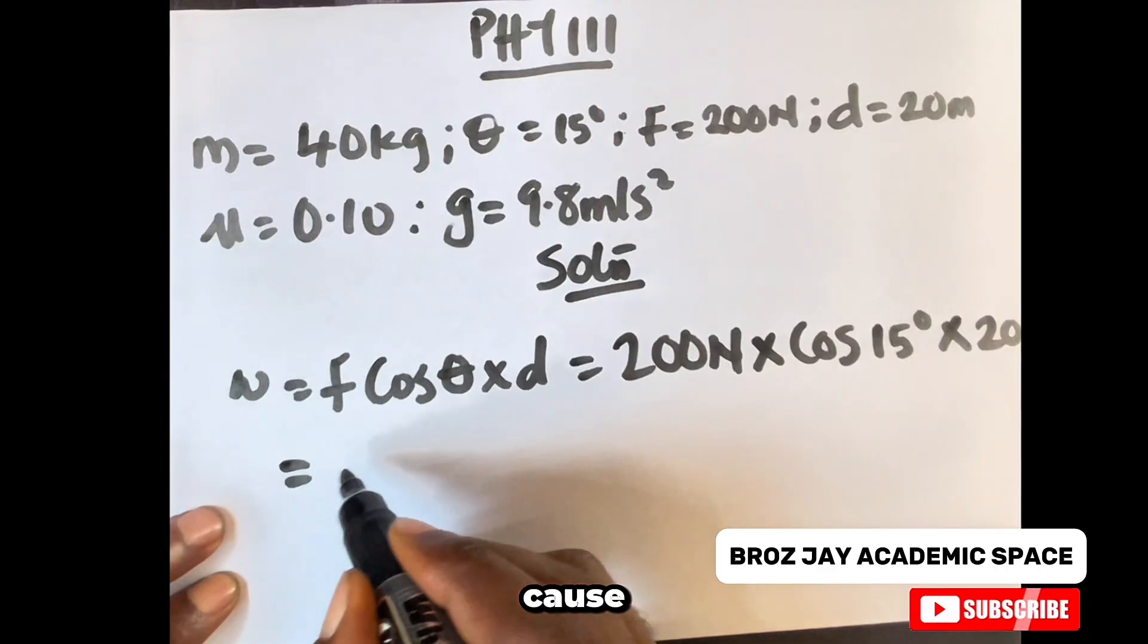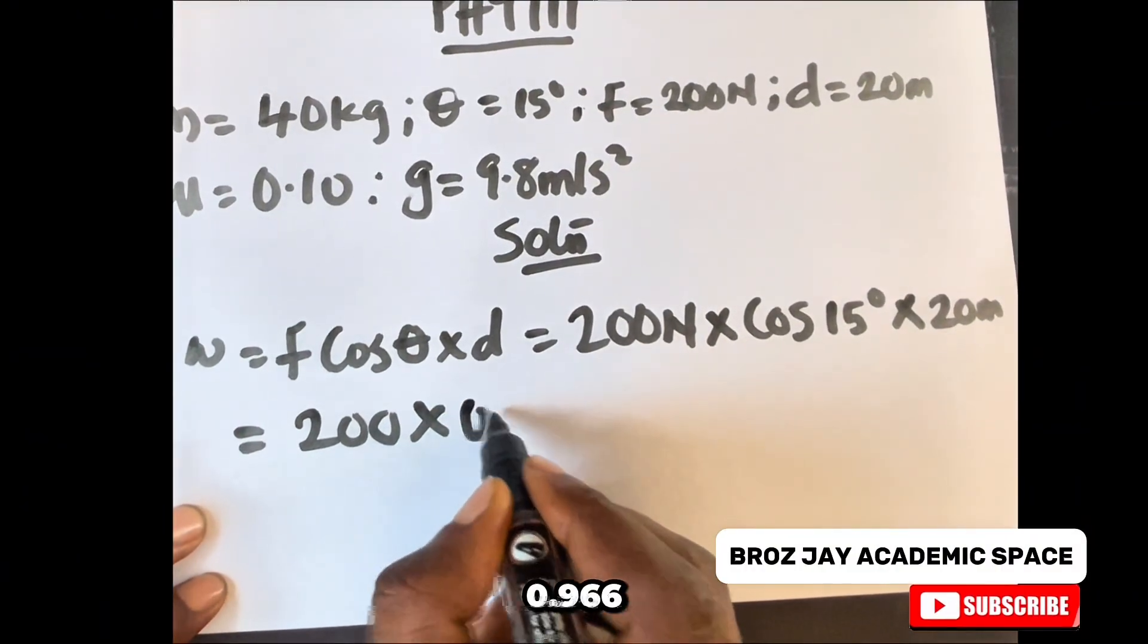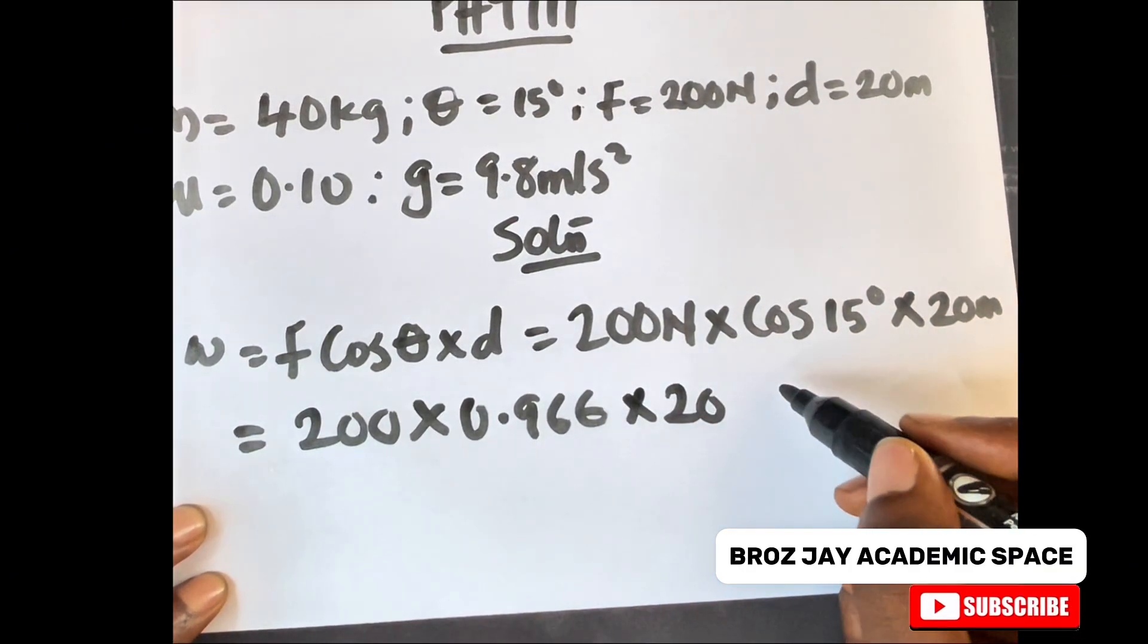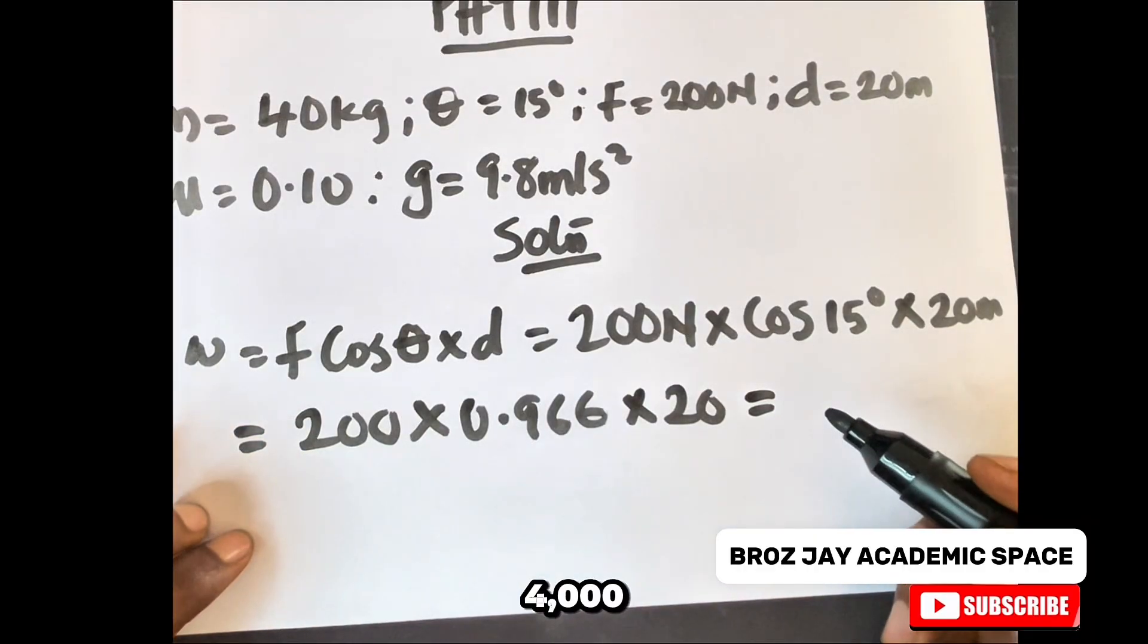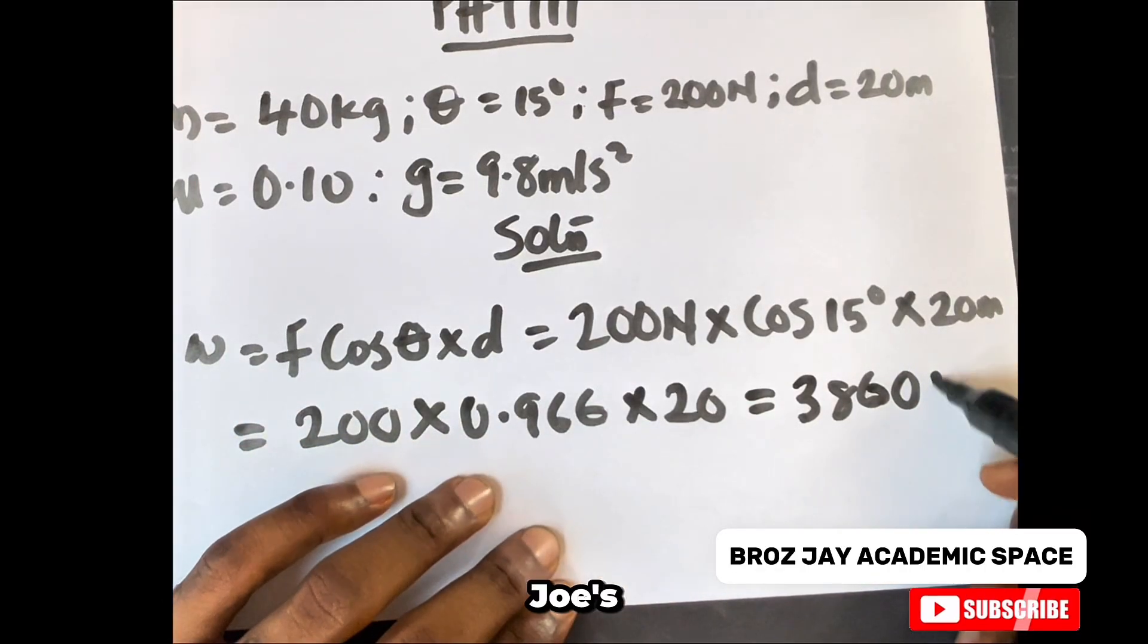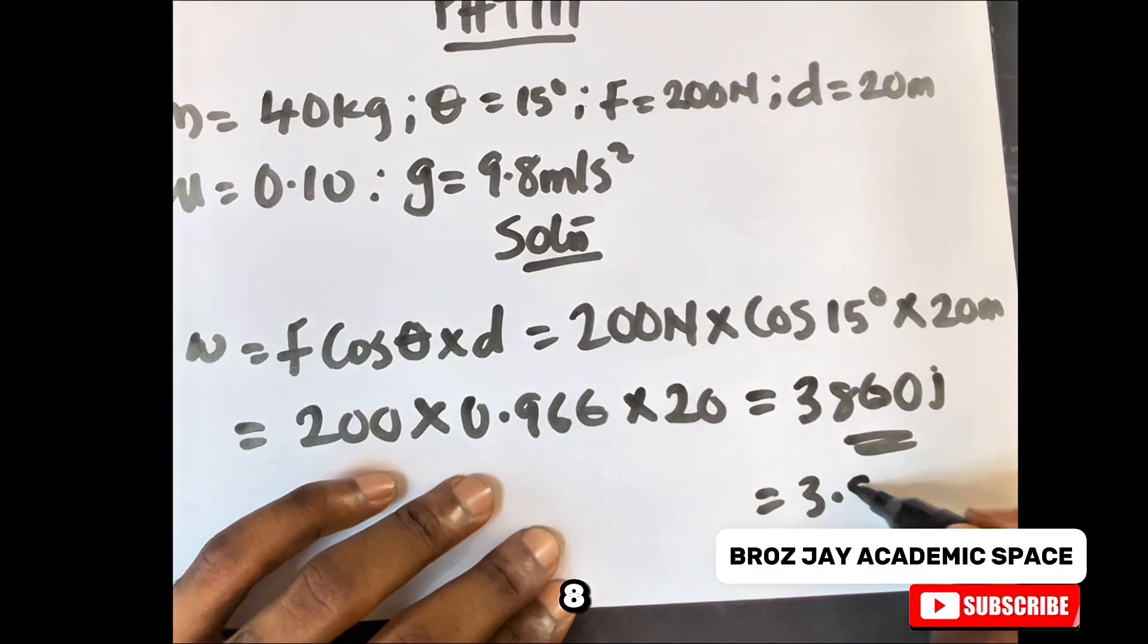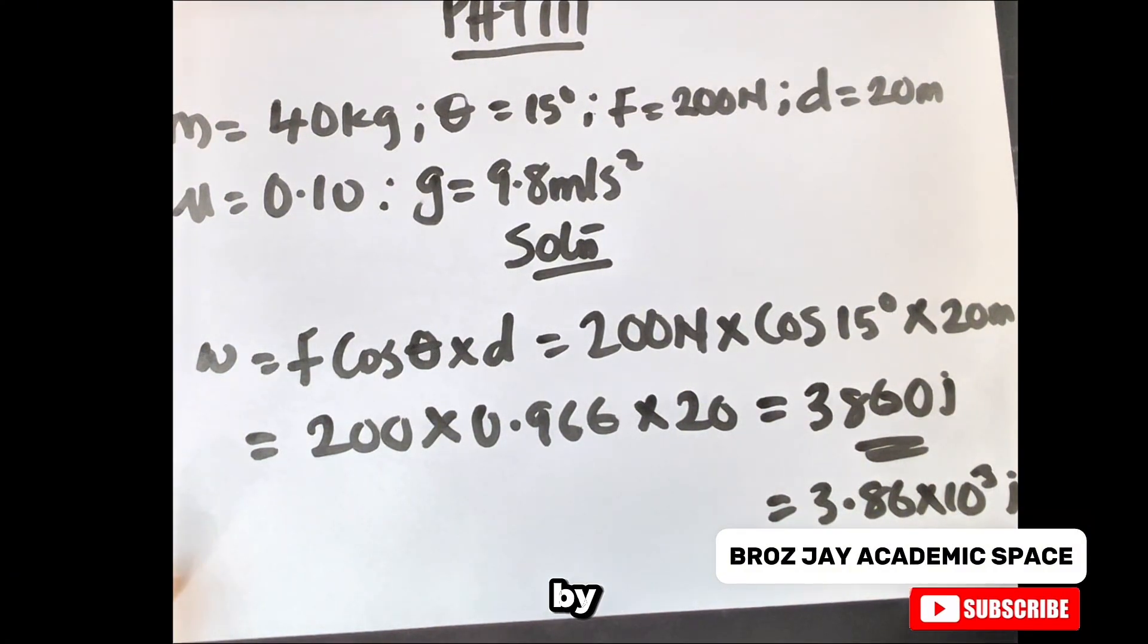If you use your calculator, cos 15 is 0.966. So 200 times 0.966 times 20 gives us 4000 times 0.966, which equals approximately 3860 joules. You can write this as 3.86 times 10 to the power 3 joules. This is your answer for the work done by the man on the box.